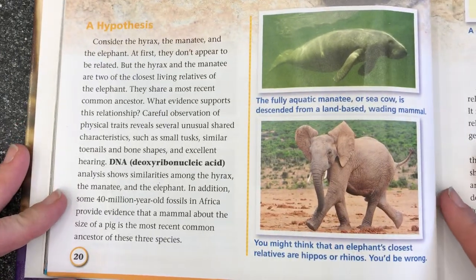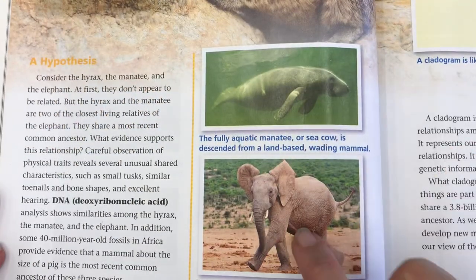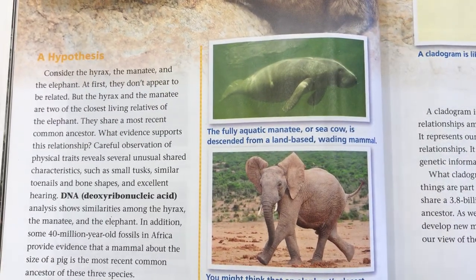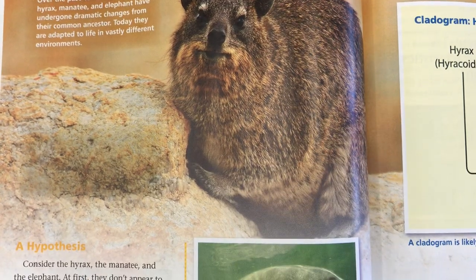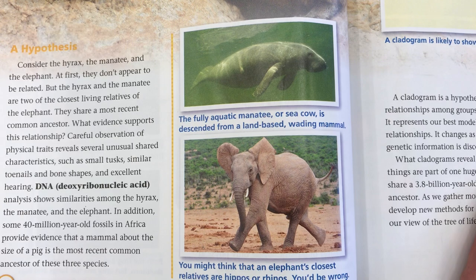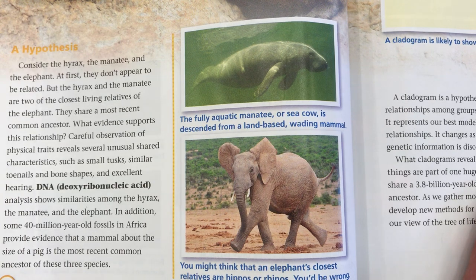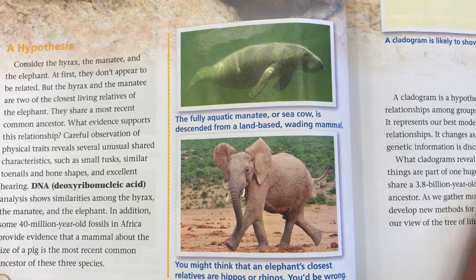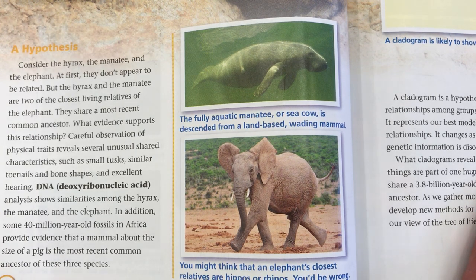A hypothesis: consider the hyrax, the manatee, and the elephant. At first they don't appear to be related, but the hyrax and manatee are two of the closest living relatives of the elephant. They share a most recent common ancestor. What evidence supports this relationship? Careful observation of physical traits reveals several unusual shared characteristics such as small tusks, similar toenails and bone shapes, and excellent hearing. DNA (deoxyribonucleic acid) analysis shows similarities among the hyrax, the manatee, and the elephant. In addition, some 40-million-year-old fossils in Africa provide evidence that a mammal about the size of a pig is the most recent common ancestor of these three species.